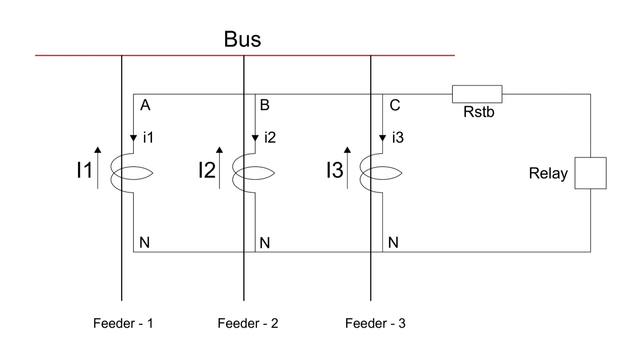So, to summarize, the stabilizing resistor plays a crucial role in high impedance differential protection by ensuring the relay does not falsely trip due to CT saturation during through faults. By correctly calculating and implementing the stabilizing resistor, we can enhance the reliability of the protection system.